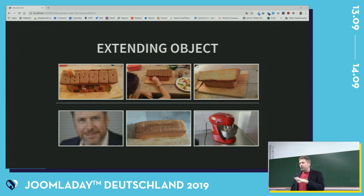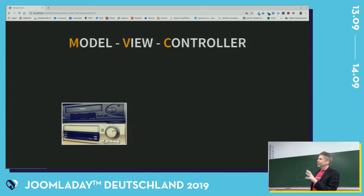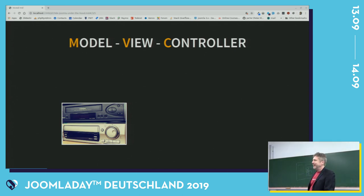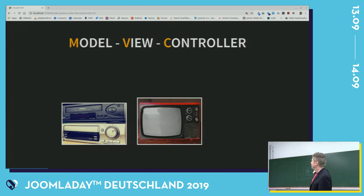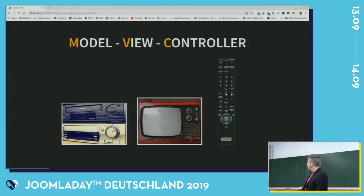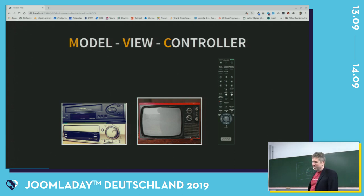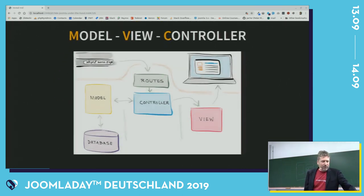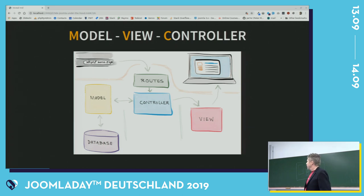In Joomla, we also have model-view-controller. We all use it daily. When I explain it: you have input — the data, which in this case is on a video recorder. We have a television, which is the view. And we have the controller, which is in this case a remote control. With the remote control, you determine which data you put to which view. If you look at it in a diagram, because of the URL the route will be determined, and the controller will get data from the model and put it in the view.